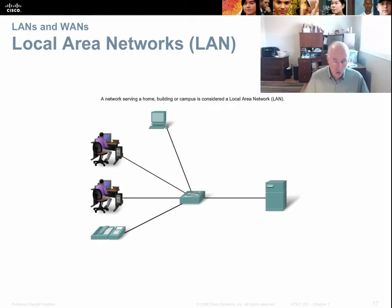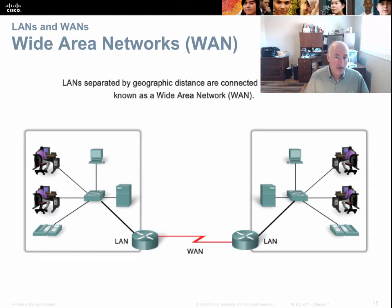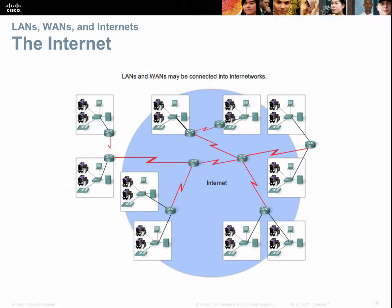A local area network is simply the network in your home or small office. A WAN is in the middle — it simply connects two or more LANs together. A WAN might be a couple hundred feet long, several miles, or span around the entire globe, like the internet. The internet is simply the collection of a whole bunch of LANs and WANs all cabled together — the collective group of all the LANs and their interconnecting WANs.